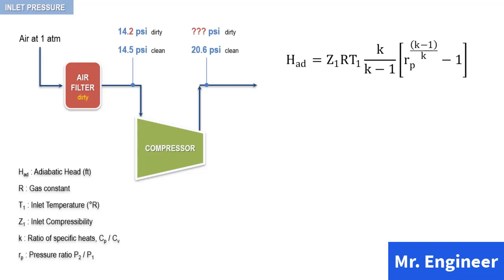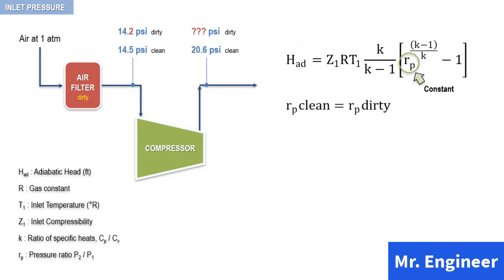For a given inlet volume flow at a given rotational speed, the head output is constant. And in our case, because there is no change in the other inlet conditions, the pressure ratio does not vary. Therefore, the pressure ratio for the clean condition equals the pressure ratio for the dirty condition.